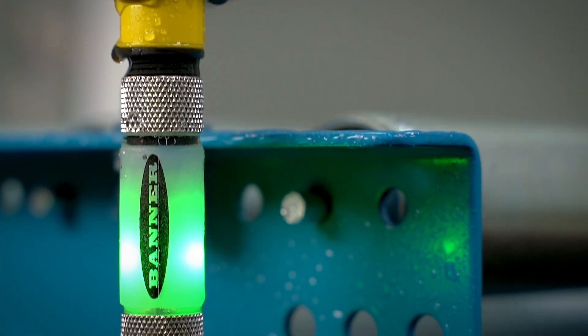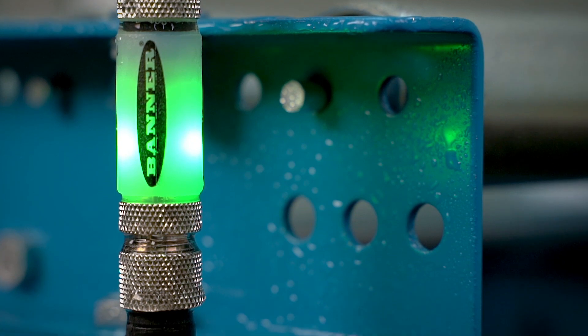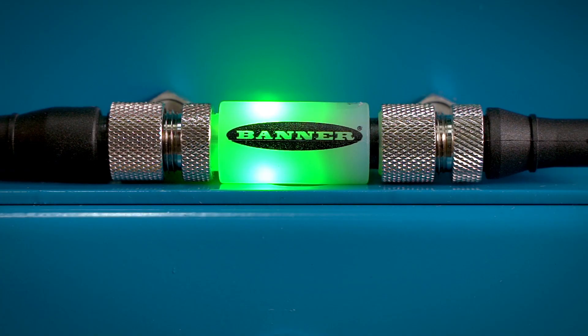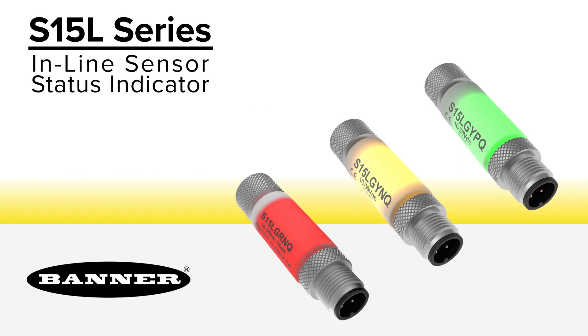The overmolded design is rugged and can withstand harsh industrial environments. Two color models are used to mimic sensor power and output status. See important sensor status clearly and easily with the S15L Series Inline Sensor Status Indicator.